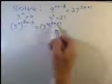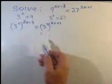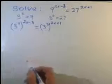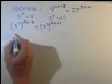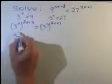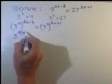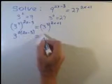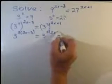When we have exponent to the exponent we just multiply the exponents and our equation takes form like this: 3 to the 2 times 2x minus 3 equals 3 to the 3 times 2x plus 1.